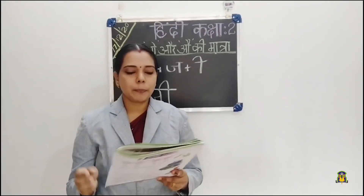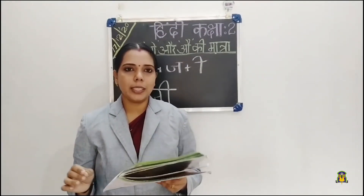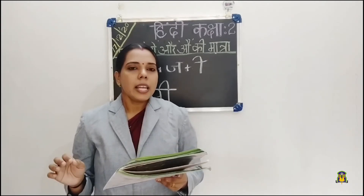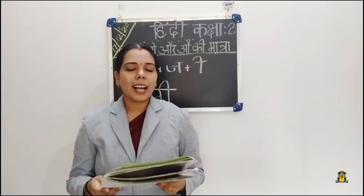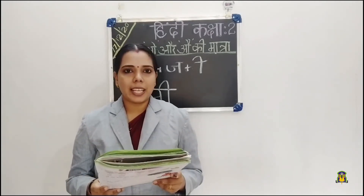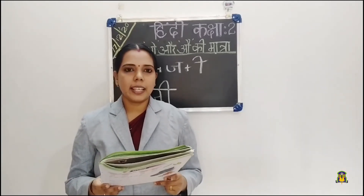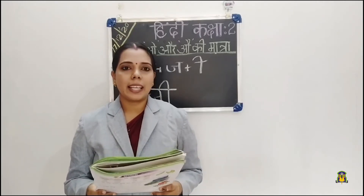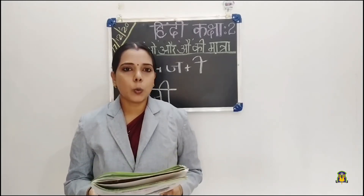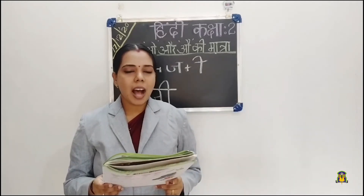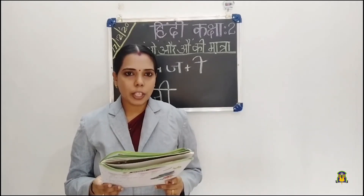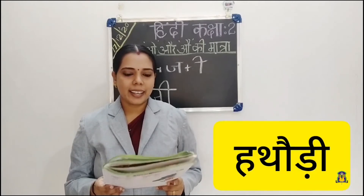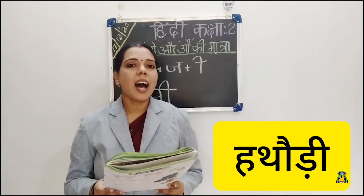We will practice one more time with the box words. First word: na plus au matra, ka plus ri — naukari. Then maa plus au matra, ta plus ee — mausi. Next: haa plus dha plus au matra, di — haathodi.